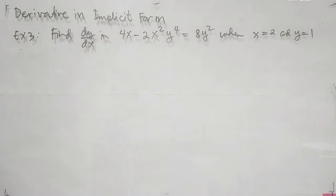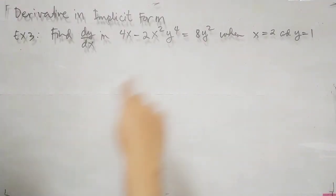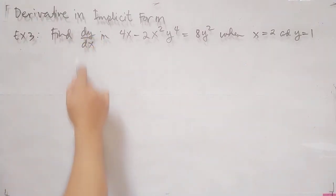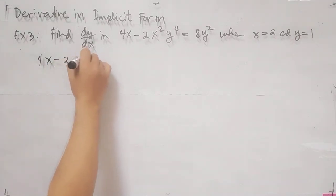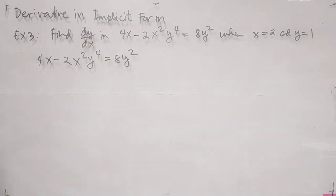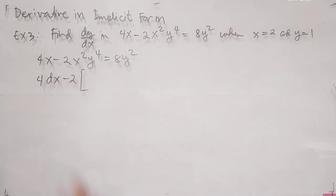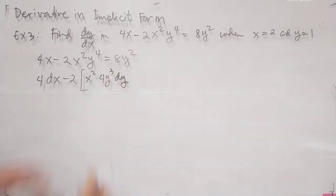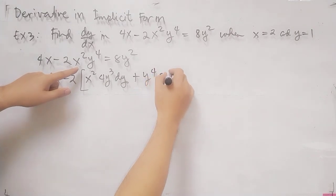Example 3: Find dy over dx in 4x minus 2x squared y to the 4th equals 8y squared, when x equals 2 and y equals 1. This time we have given values of x and y, and we are going to find the derivative of y with respect to x for this implicit function.